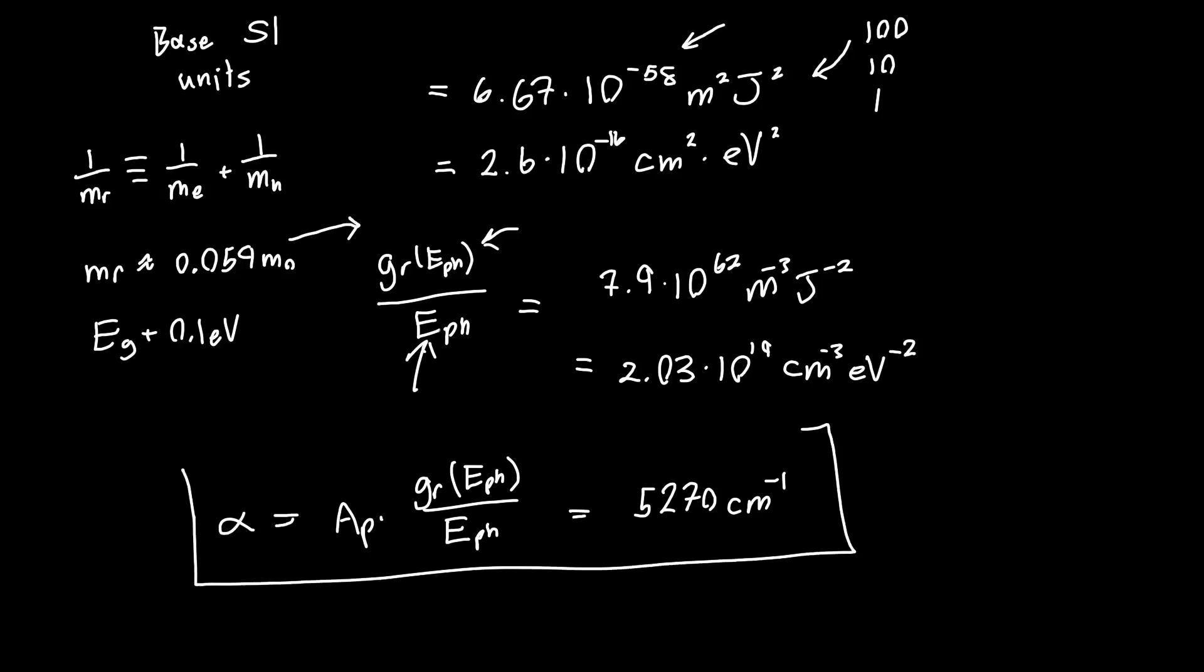This is our prediction for gallium arsenide at 0.1 electron volts above band edge. And if you actually look up an absorption spectra for gallium arsenide, so if you actually look up online an absorption spectra, you'll notice that we're off by about a factor of 2, which might be a little disappointing, but also kind of impressive, because all we used was pure theory to get this, as well as a couple material parameters.